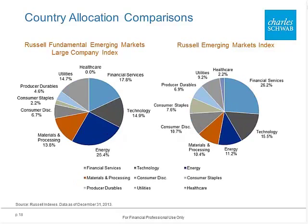Looking at sector allocations: the Russell Fundamental version is overweighting utilities, materials, and energy, and underweighting financial services, consumer staples, and consumer discretionary. Nobody is making an active call on that — it's a byproduct of the discipline. But what you start to realize is that portfolio construction varies quite a bit over time based on the methodology.